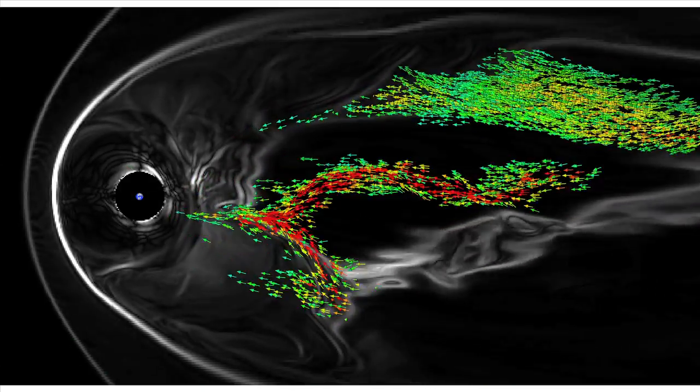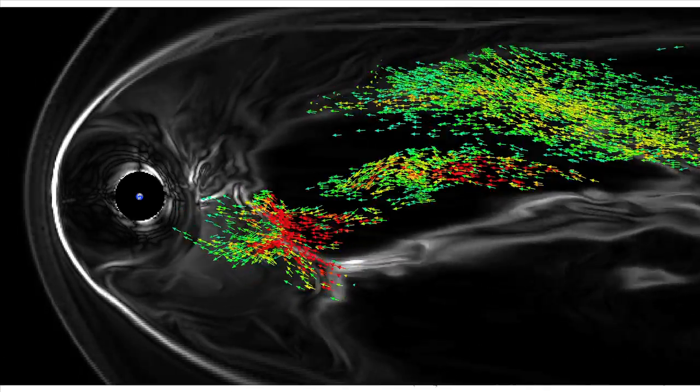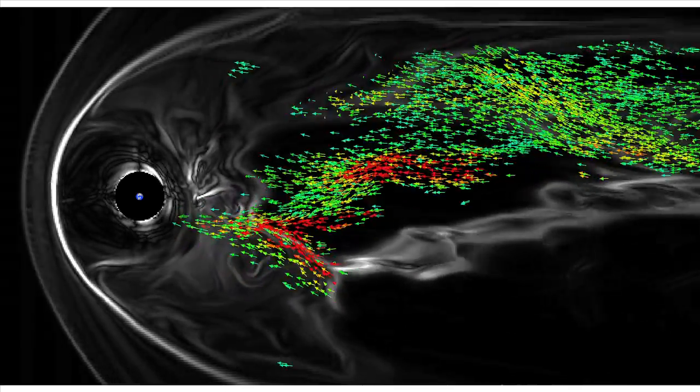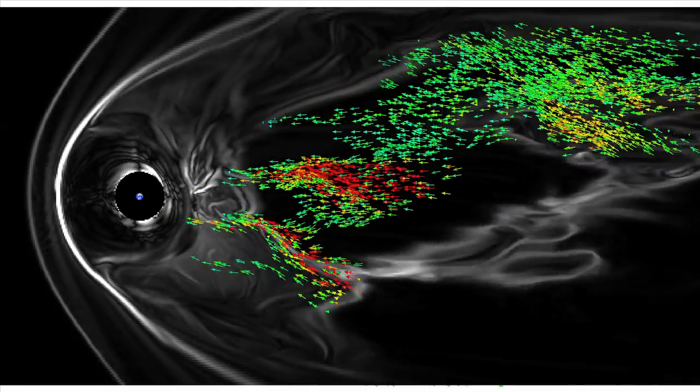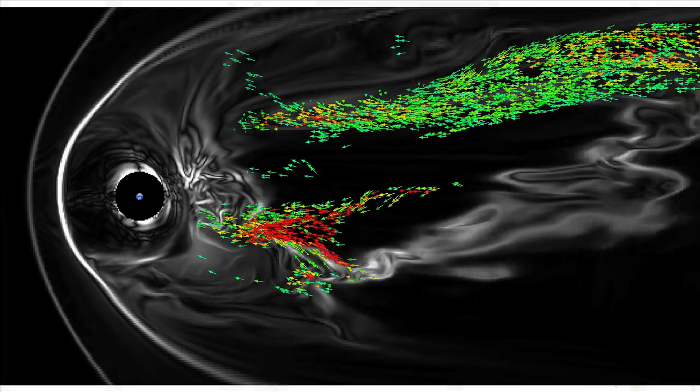Now we're looking at a time later in the simulation. The site of reconnection has moved far down the Earth's magnetotail and is generating flows of plasma, that is arrows, that move to the left towards the Earth and towards the Sun.